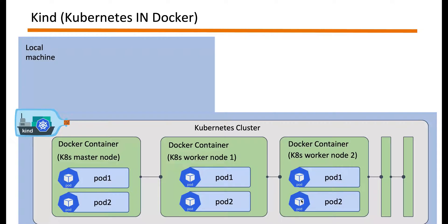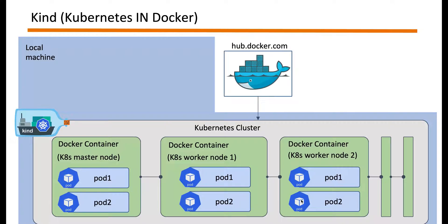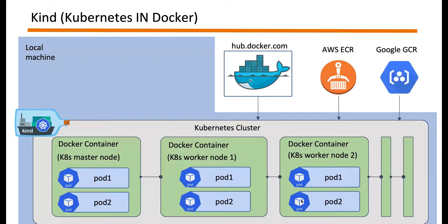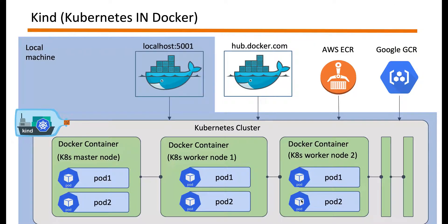We are going to run our business logic within these pods by providing our own Docker image. We can fetch these images from different places — options like images hosted on public Docker Hub, or from AWS ECR or Google GCR. But for simplicity, we are going to spin up our own Docker registry at port 5001 on our local machine and allow the Kubernetes cluster to fetch images from this local Docker registry. You can build your Dockerfile locally, push it to the local registry, and the Kubernetes cluster will fetch it and run it inside your pod.